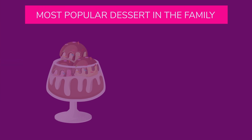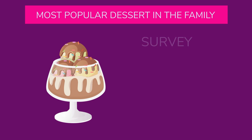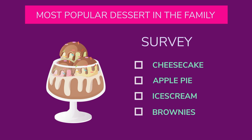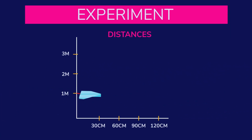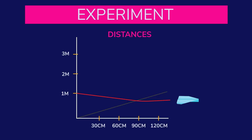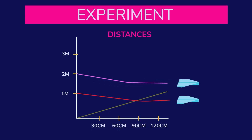More examples: To find out the most popular dessert in your family, you would use a survey and record their answers in a table. To find out which paper airplane design flies the farthest, you would carry out an experiment, test both designs three times, and record the distances.